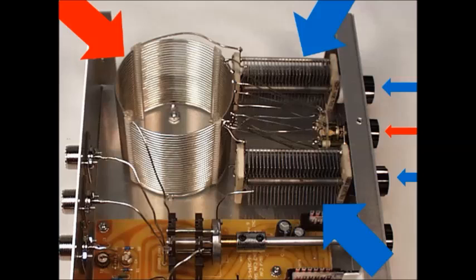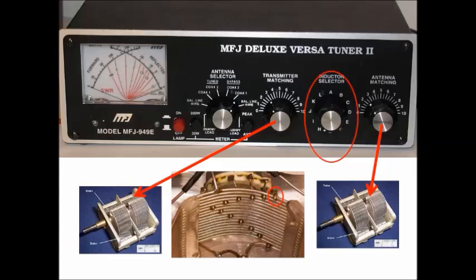So under the hood of the MFJ 949E tuner, the big red arrow is pointing at the coil, the roll of wire. The blue arrows are pointing at the two variable capacitors. And the little arrows on the right-hand side are actually pointing at the knobs that will turn to manipulate these three components in an effort to adjust the electrical characteristics of our antenna system to get that ideal transmitting match, so we don't damage our equipment and we have the most efficient operations.